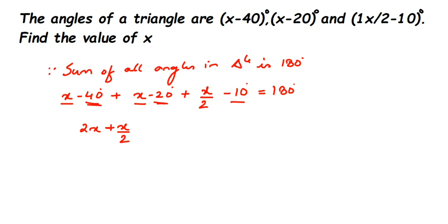For the constants: -40, -20, and -10. When they have the same sign, we add them. -40 plus -20 is -60, and -60 minus 10 gives us -70.